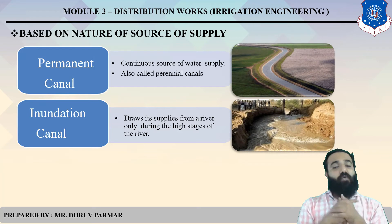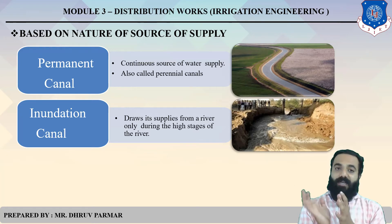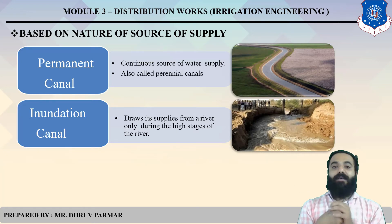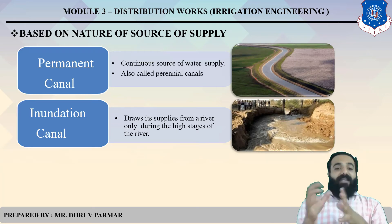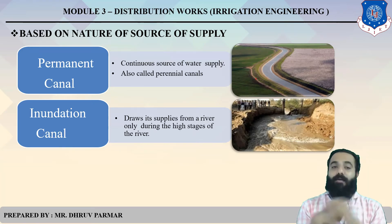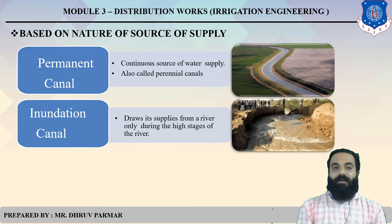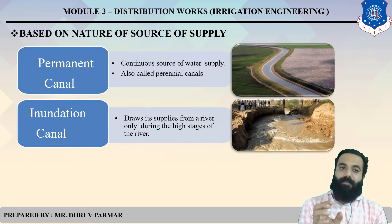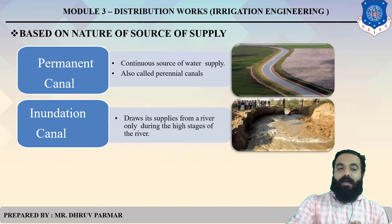Based on source of supply: a Permanent Canal has a continuous source of water supply — the water flows continuously. An Inundation Canal draws its supplies from a river only during high stages, meaning when the monsoon comes, that Inundation Canal will be activated. So, Inundation Canal is just a temporary structure, while a Permanent Canal is permanent.